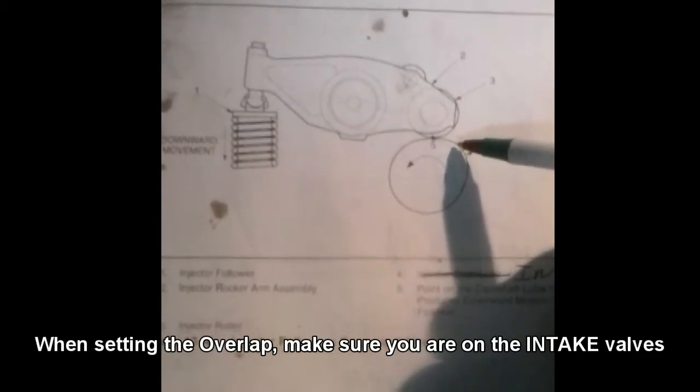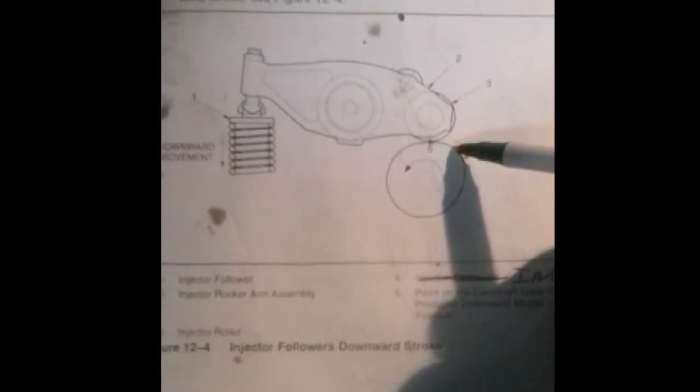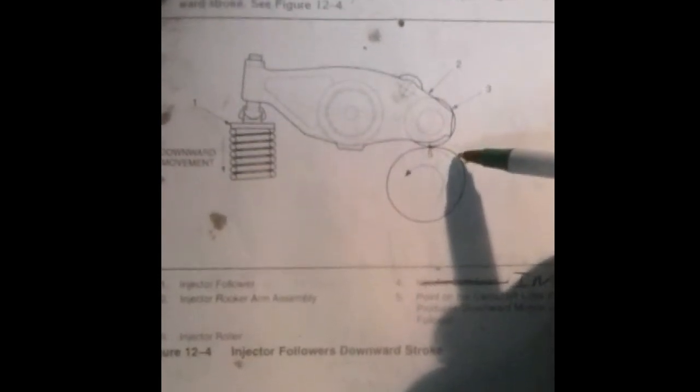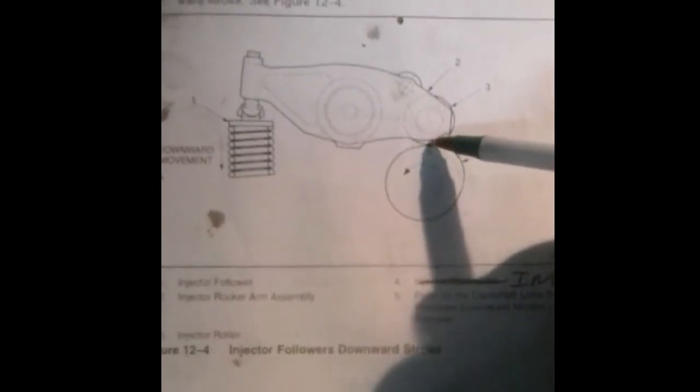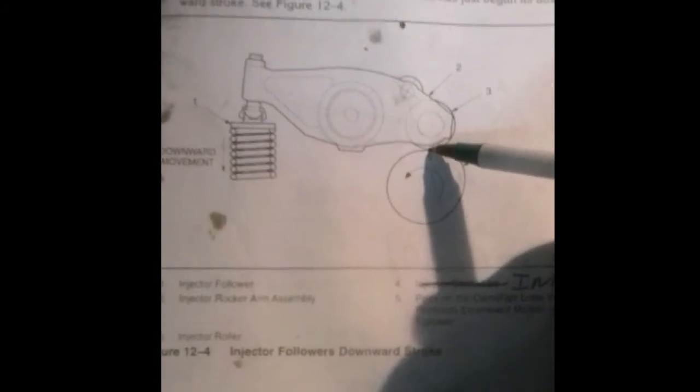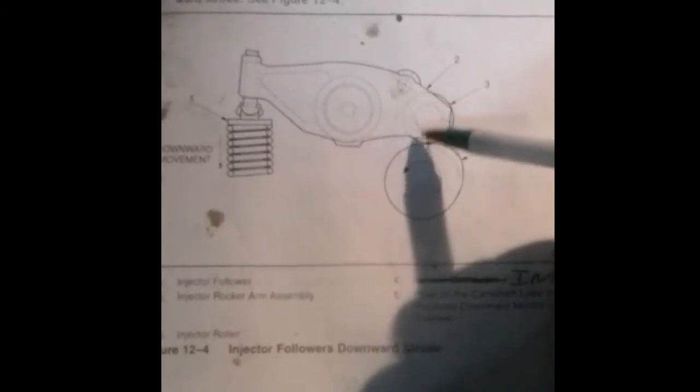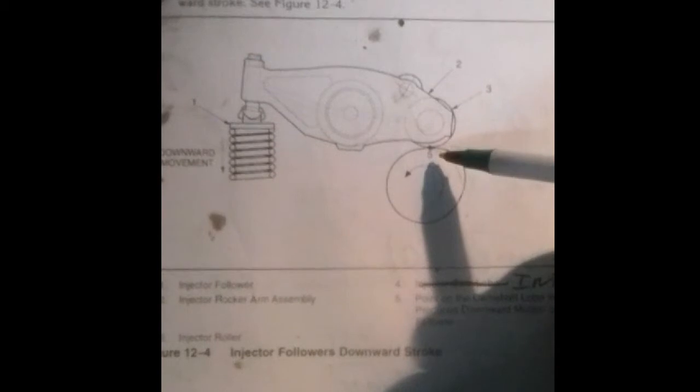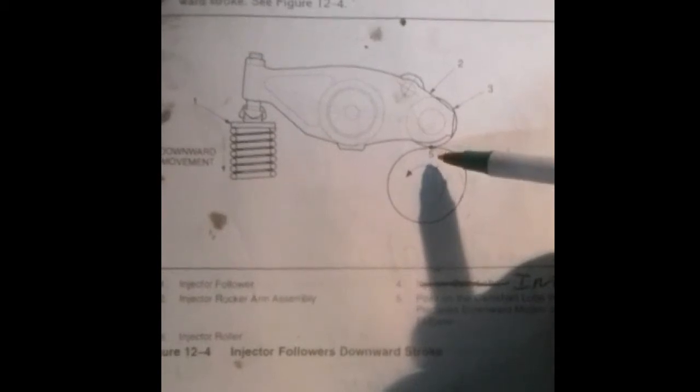But to make the adjustment, you get on the driver's side, have somebody bar the motor over and just kind of watch the lobe as it comes directly underneath the roller bearing on your intake valve assembly.